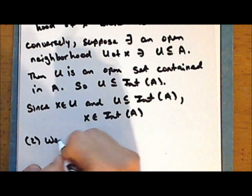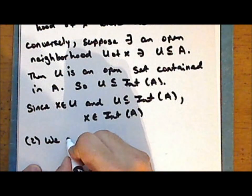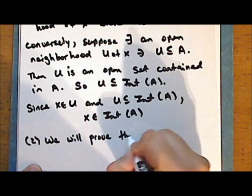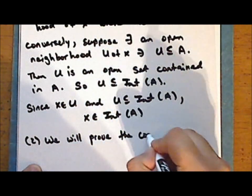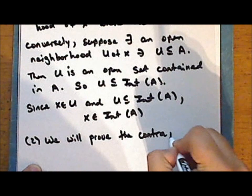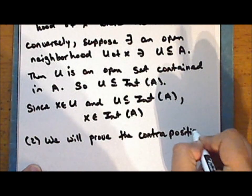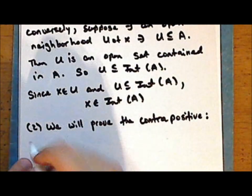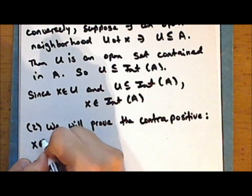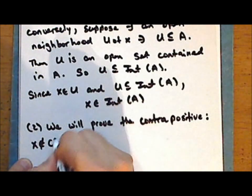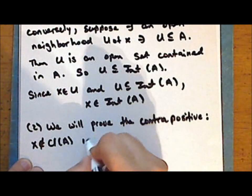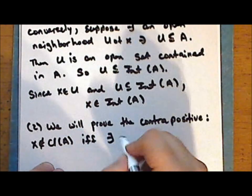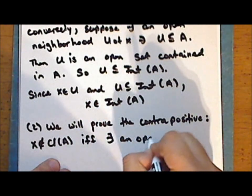Second statement: we will prove the contrapositive, which is the statement that x is not in the closure of A if and only if there exists at least one open neighborhood of x whose intersection with A is empty.